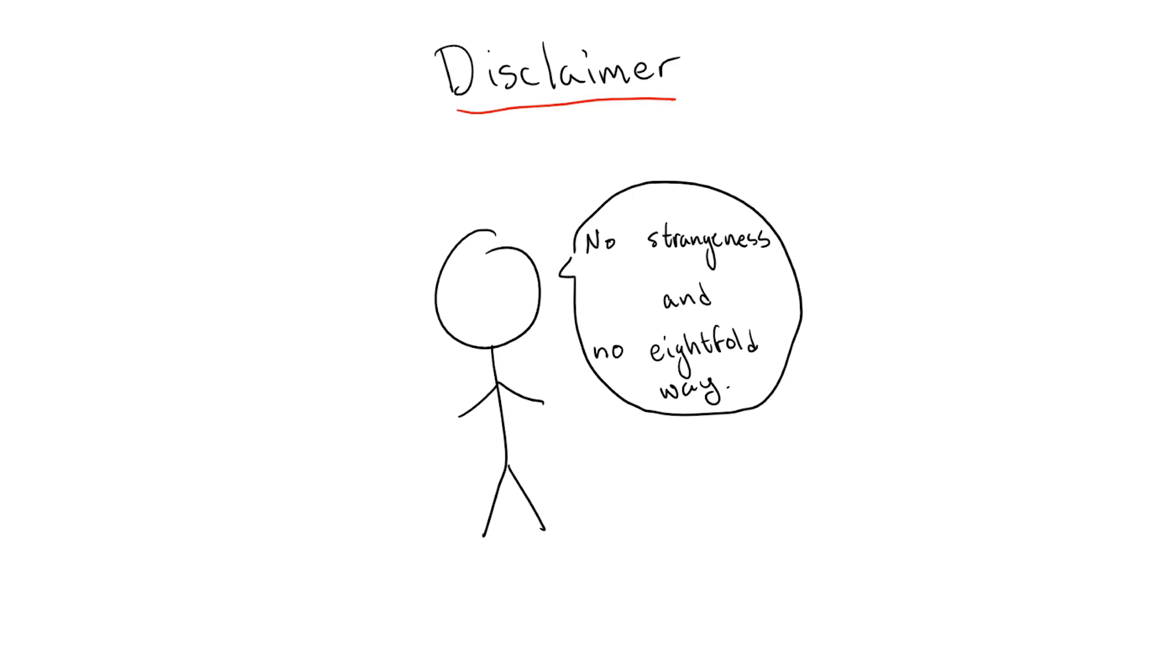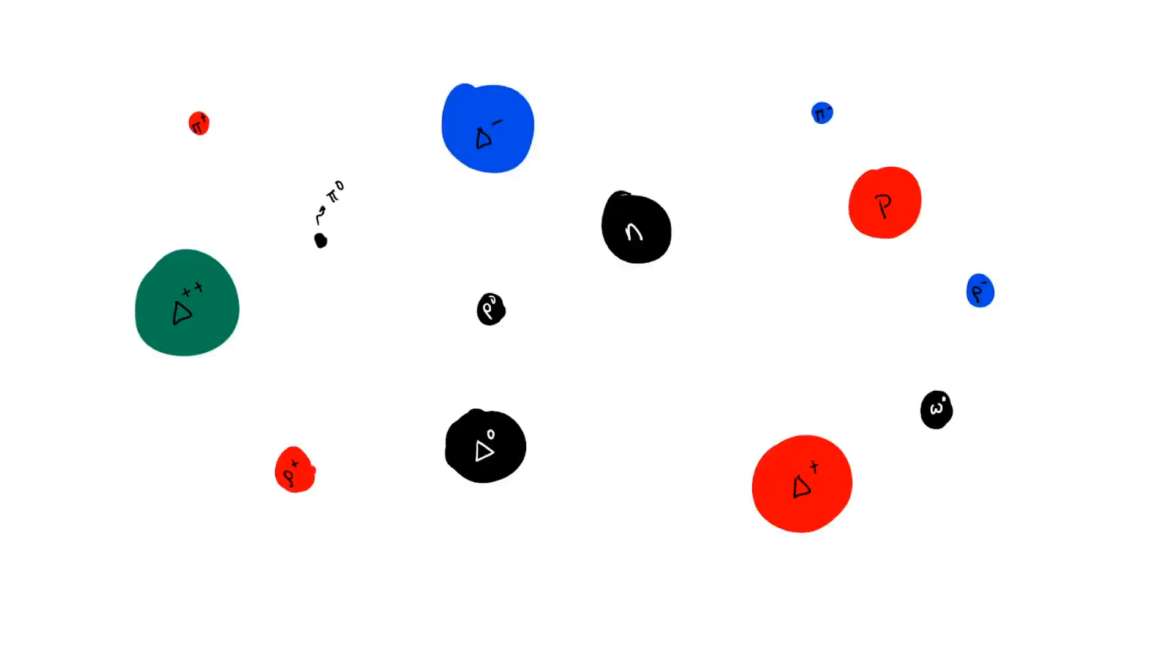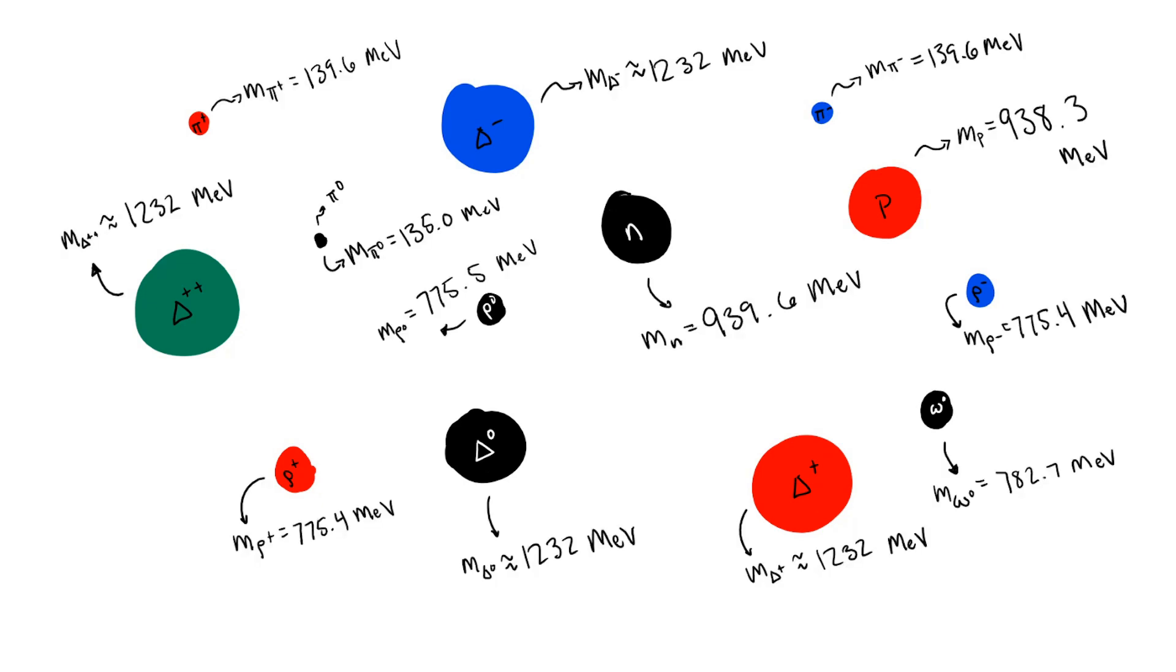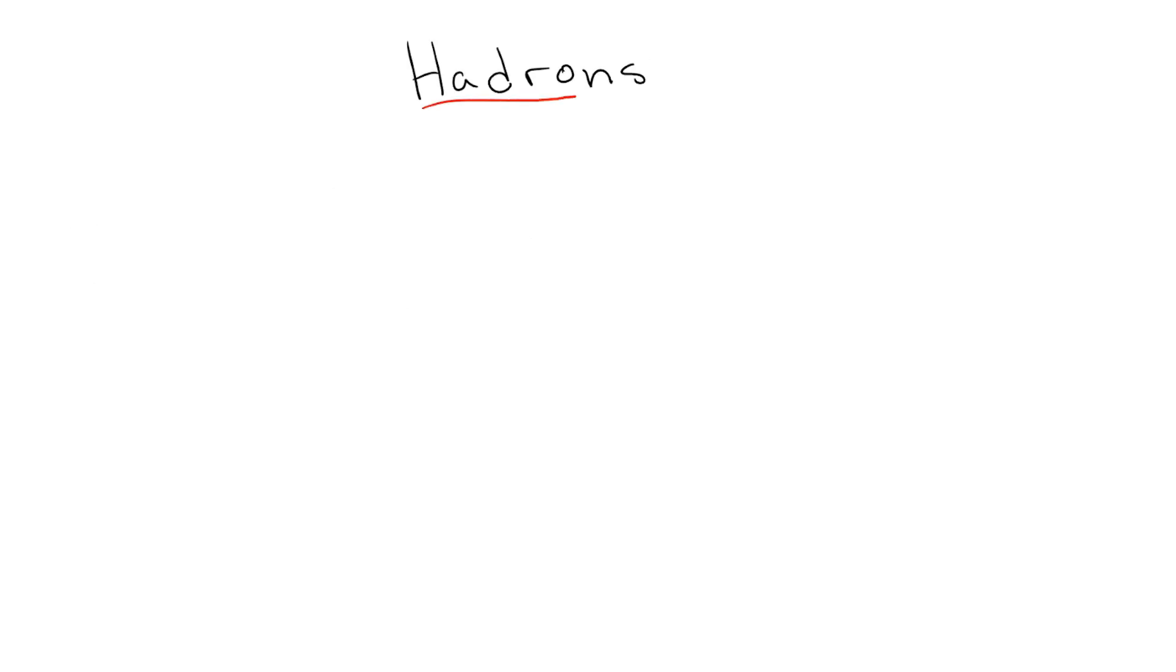Now, the first thing to note about these newly discovered particles is that they're all fairly massive when compared to other known particles at the time, like the electron and neutrino, the lightest being nearly 300 times the electron mass, or about one-tenth the mass of the proton and neutron. Due to this discrepancy in mass, these heavier particles were given the names of hadrons, from the Greek hadros, which roughly means bulky or large.